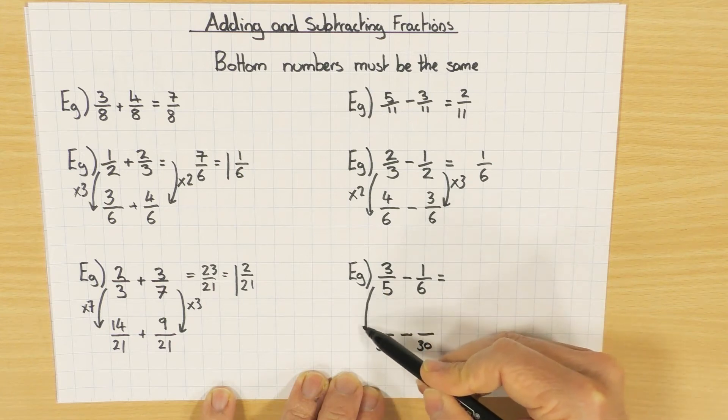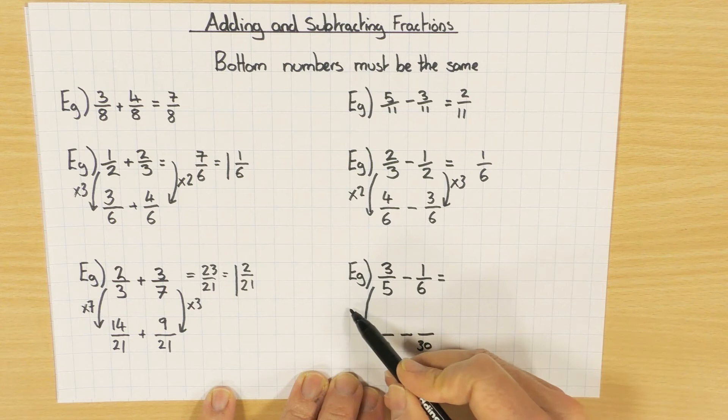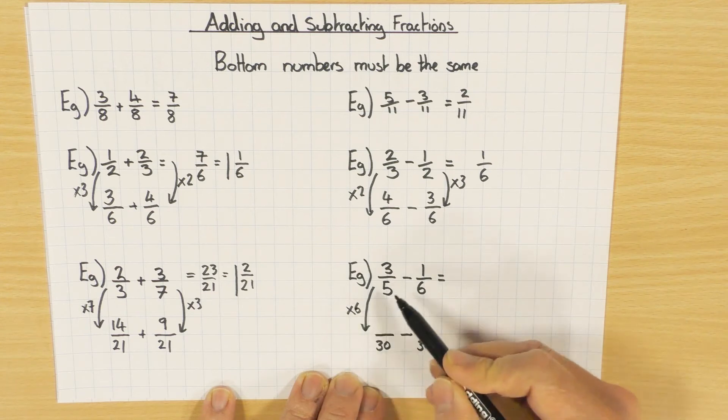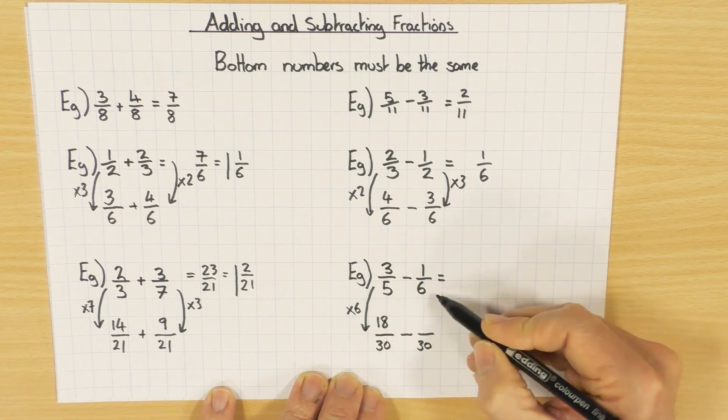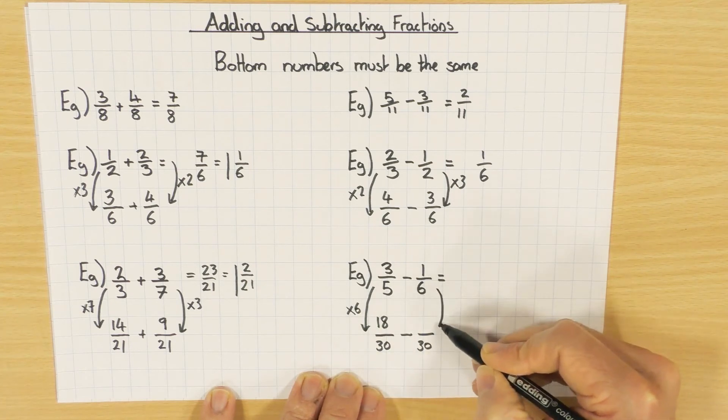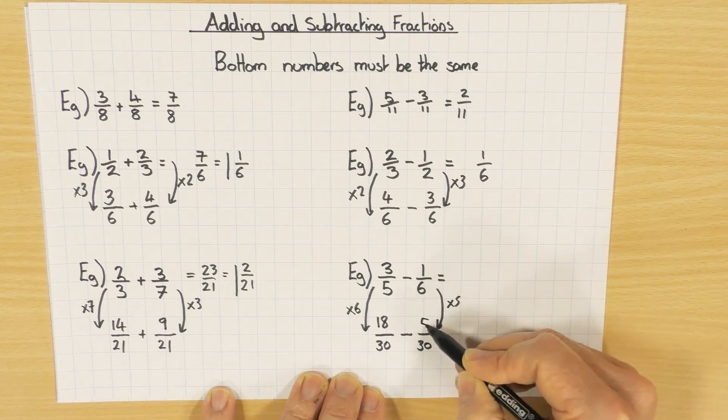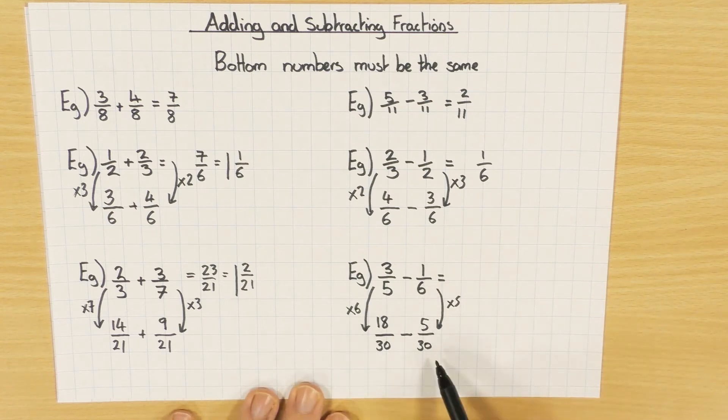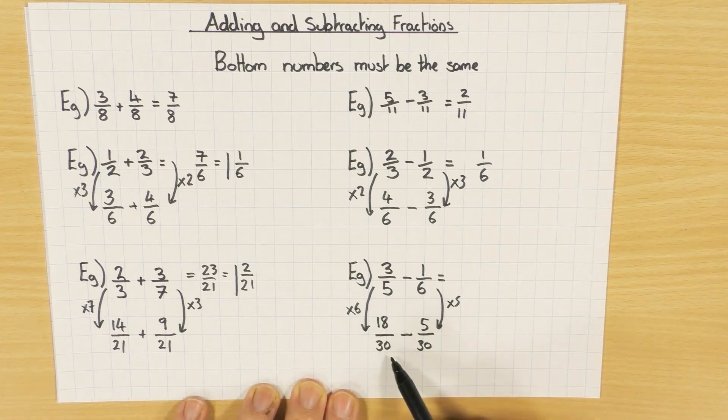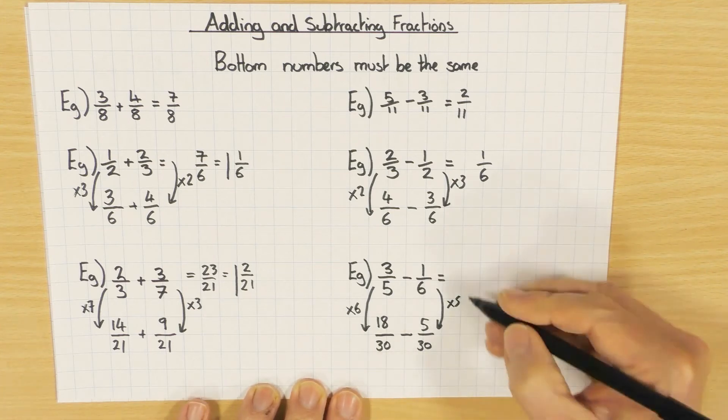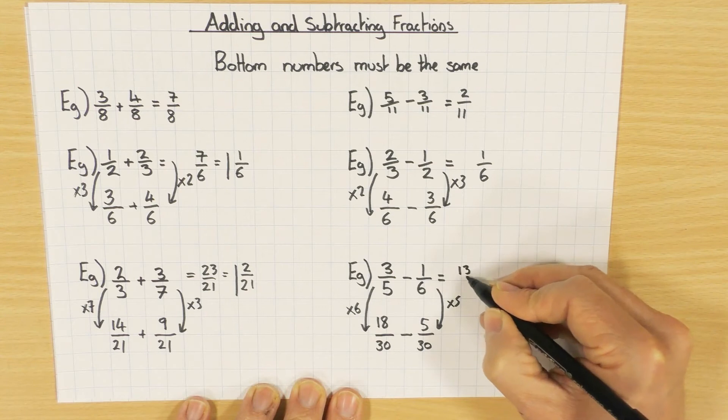What we've done to the left-hand fraction to go from five to 30, I've multiplied by six, so I'm going to multiply the top one by six as well. What we've done to the six to go to 30, I've multiplied by five. One times five is five. And there we go, we've made the question easy. 18 over 30 minus 5 over 30 is simply 13 over 30.